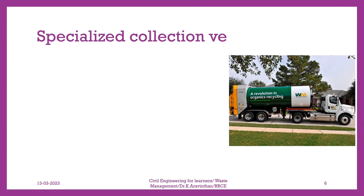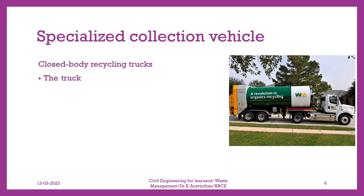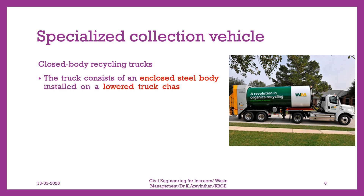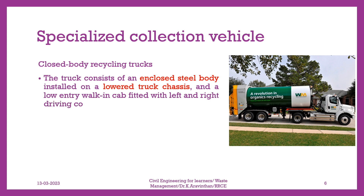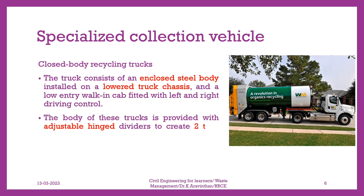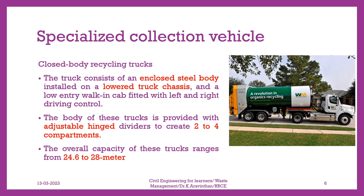Specialized collection vehicle: Closed-body recycling trucks. The truck consists of an enclosed steel body installed on a lowered truck chassis and a low-entry walk-in cab fitted with left and right driving control. The body of these trucks is provided with adjustable hinge dividers to create 2 to 4 compartments. The overall capacity of these trucks ranges from 24.6 to 28 cubic meters.